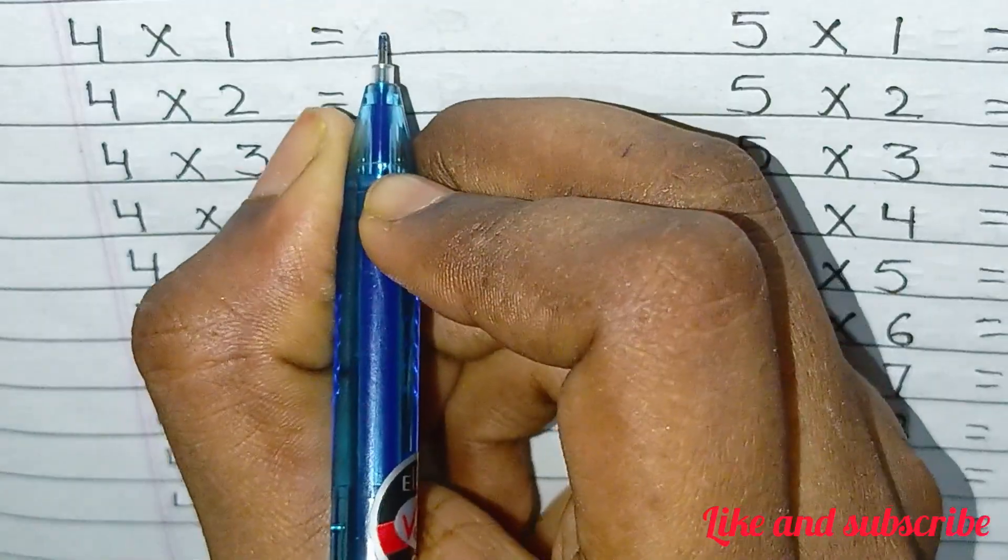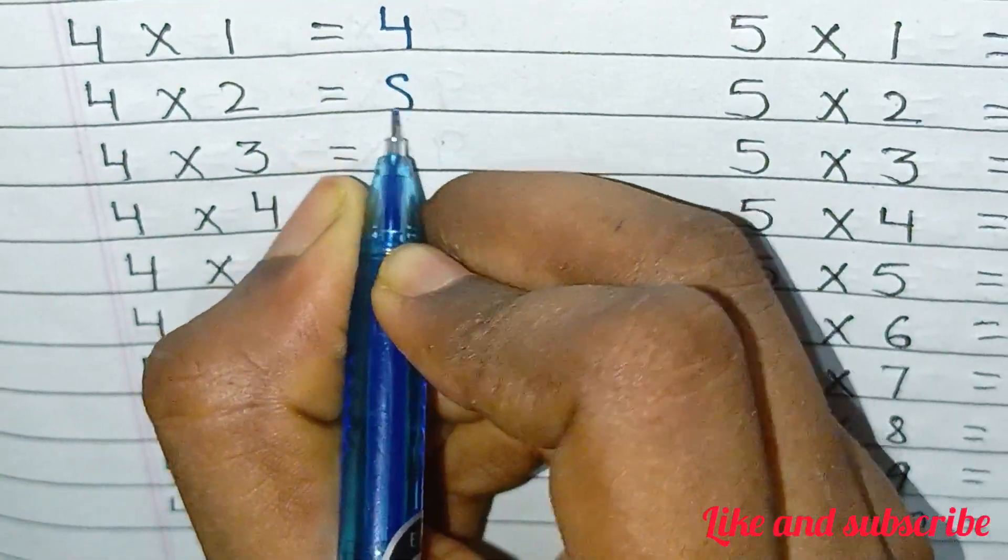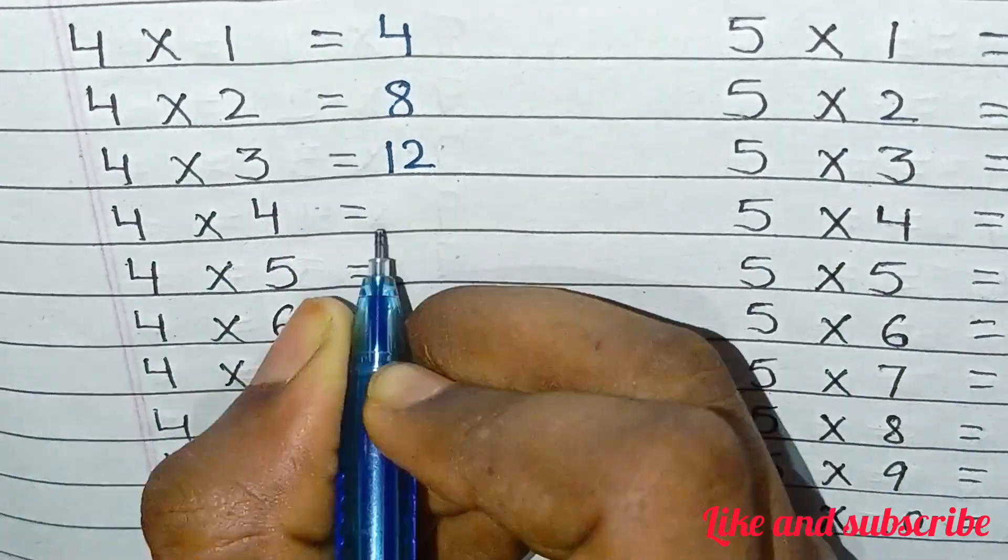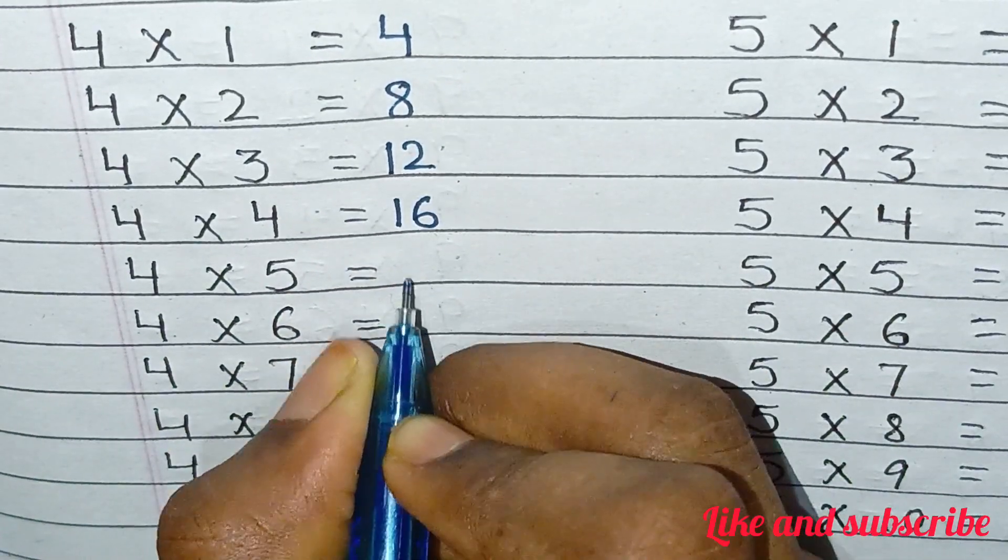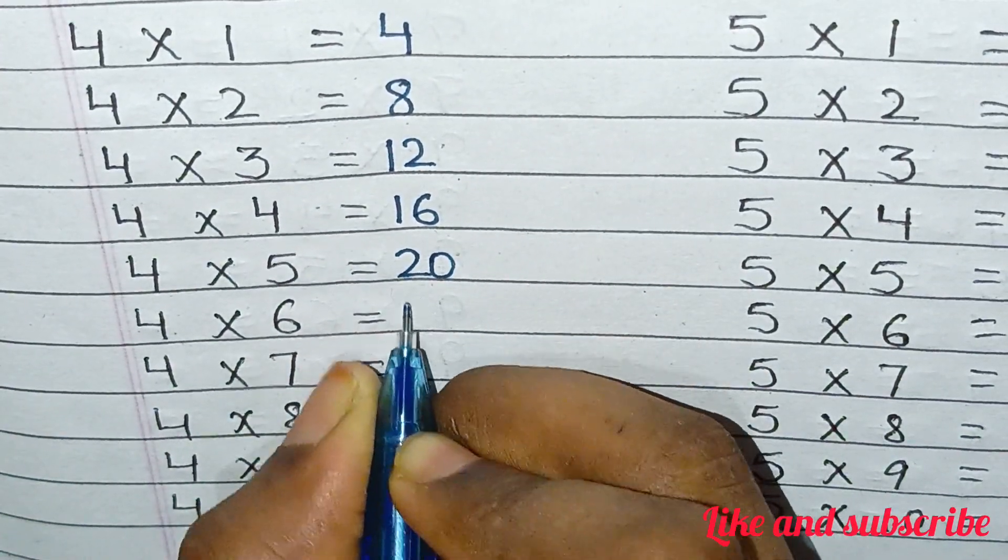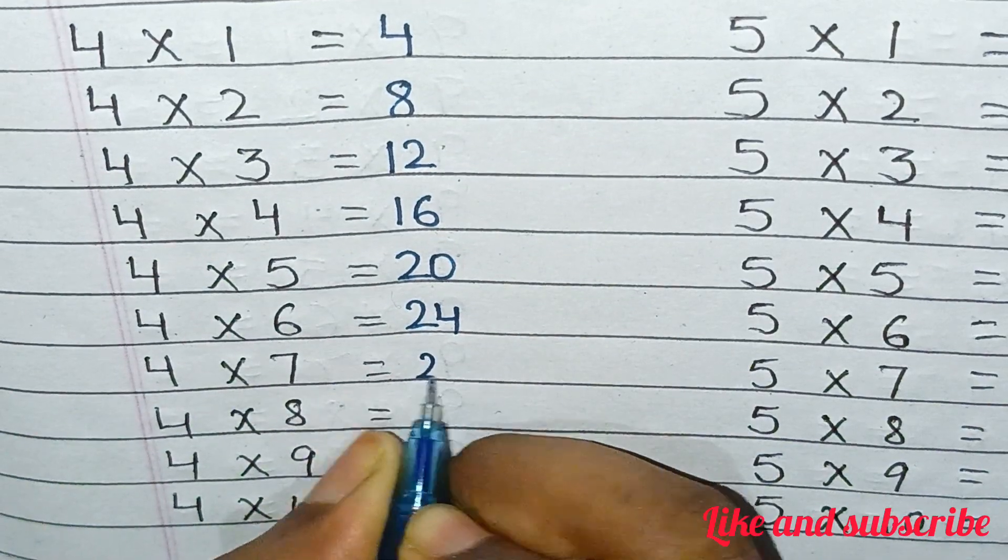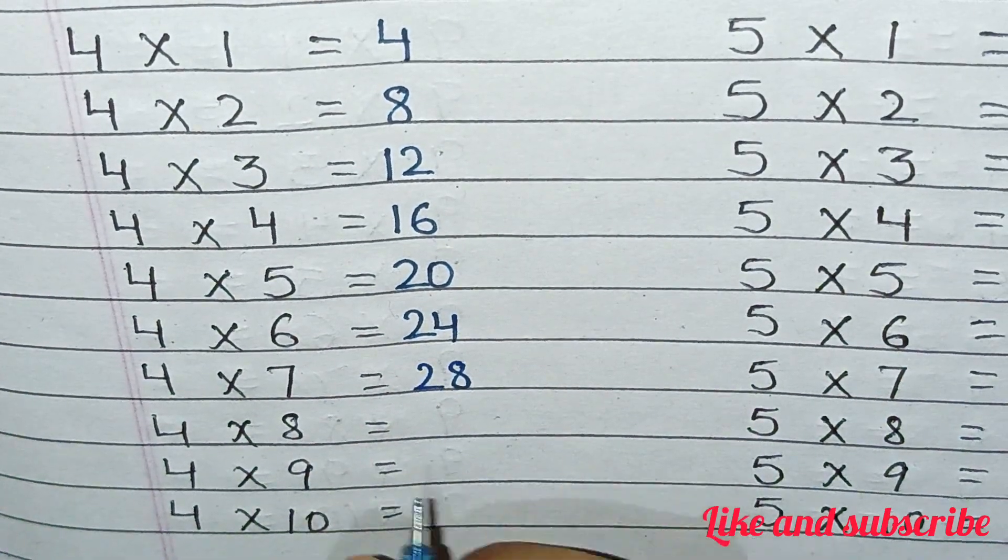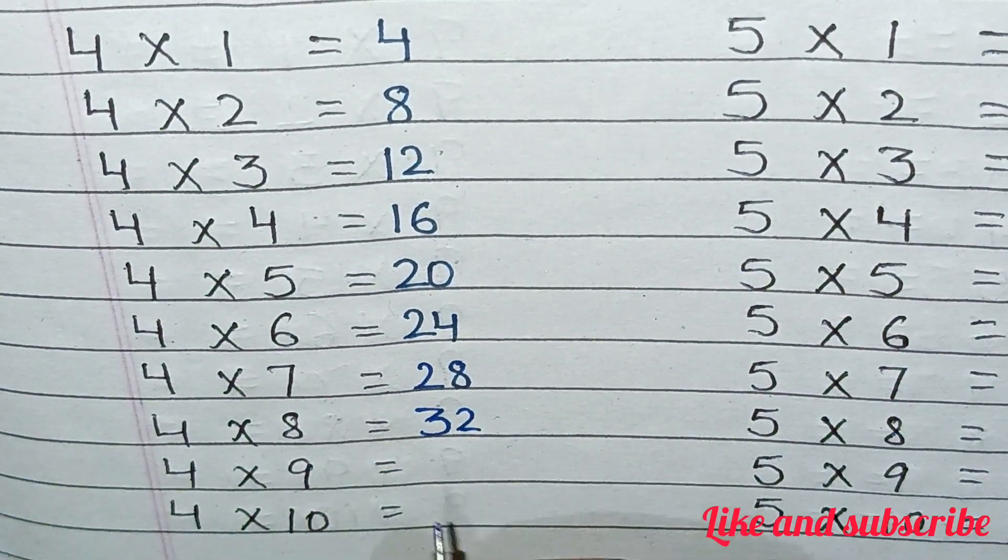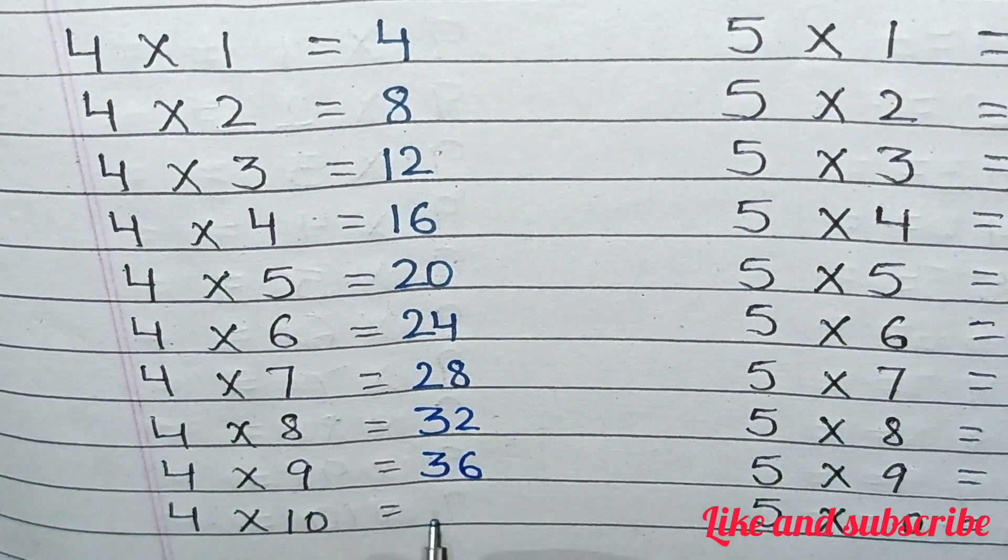4×1=4, 4×2=8, 4×3=12, 4×4=16, 4×5=20, 4×6=24, 4×7=28, 4×8=32, 4×9=36, 4×10=40.